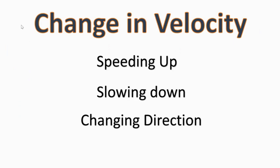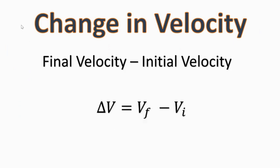In any of these cases, it's possible to put a number to how big the change in velocity was. Here's the formula: change in velocity is equal to the final velocity minus the initial velocity. The delta symbol — the triangle-looking sign — is the Greek letter delta, used in front of variables to show we're measuring a change. So: final velocity minus initial velocity, what's the velocity after the event minus what it was before.